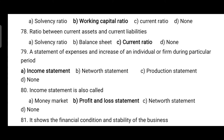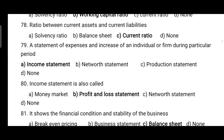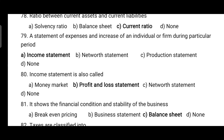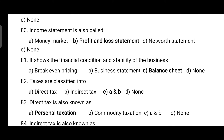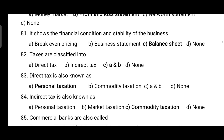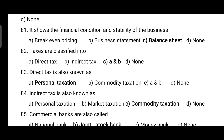The ratio between current assets and current liabilities is the current ratio. A statement of expenses and income of an individual or firm during a particular period is known as an income statement, also called a profit and loss statement. A balance sheet shows the financial condition and stability of the business.